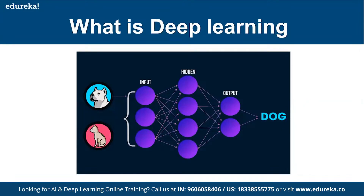A single-layer neural network has only one hidden layer to process and compute operations. Deep learning may have multiple hidden layers — more than one. As an example, we can feed in a lot of images — dogs, cats, lions, tigers — and the model will identify what image is being fed. To do that, we first need to train our model.